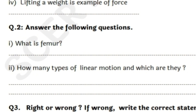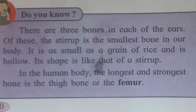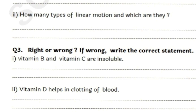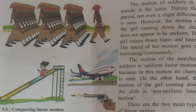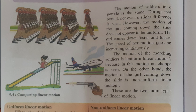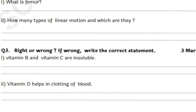Now, question number two. What is femur? The longest and strongest bone in the human body is the thigh bone, called femur. The second question is: how many types of linear motion are there and which are they? Linear motion is of two types — uniform linear motion and non-uniform linear motion. Now we are turning to question number three: right or wrong? If wrong, write the correct statement.